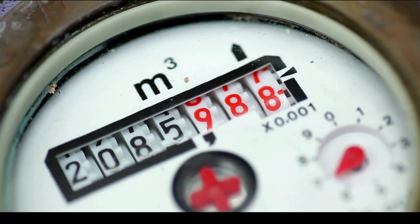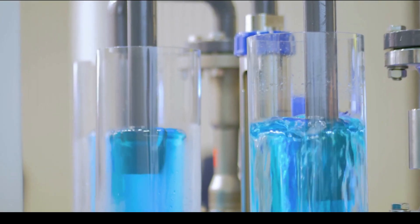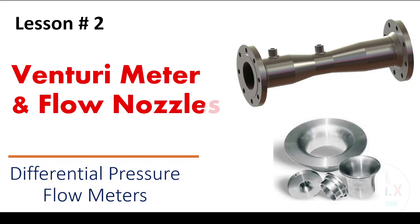So this is our second lesson about differential pressure flow meters where we are going to discuss first venturimeters, then flow nozzle, and then we will see the advantages and disadvantages of each type.